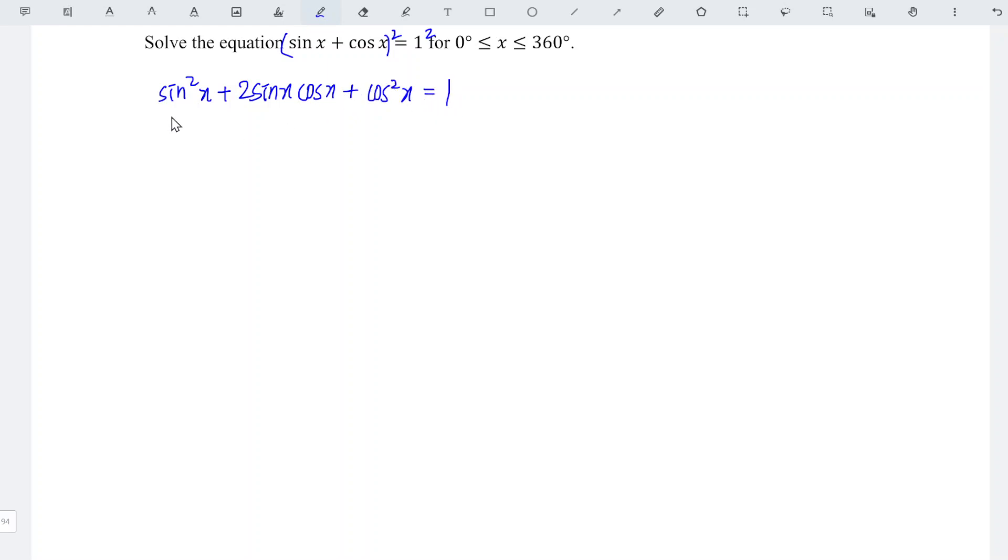Apply the trigonometric identity sin²x + cos²x = 1 and 2sinx cosx = sin2x, and this equals 1. 1 cancels with 1, which means sin2x = 0.